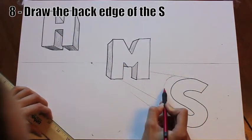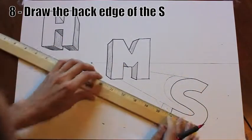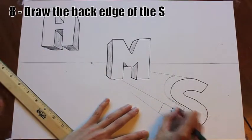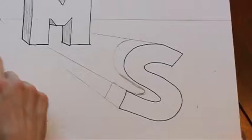For the back edge of the rest of the S, you want to try to draw what you have on the front edge only slightly smaller. That is your quote-unquote parallel back edge.